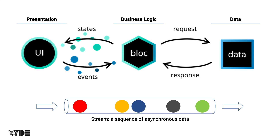Just listen to the processing result of Bloc and update the UI when the result comes. These events and states occur asynchronously throughout the life cycle of your app. However, Dart provides a stream that can handle a series of continuous asynchronous data. It is a very good tool for passing events and state between UI and Bloc. For this reason, the FlutterBloc package uses a stream as a communication channel between UI and Bloc.